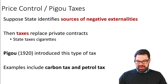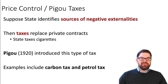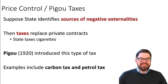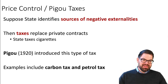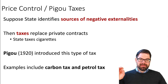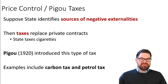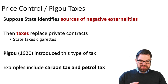These taxes that regulate production or consumption have a long tradition in economics, because negative externalities are not new. One of the most prominent economists to study them was Arthur Pigou, who was among the first to write about taxes as a remedy for negative externalities — which is why this type of tax is named after him. Examples include carbon taxes and petrol taxes — these are Pigou taxes.